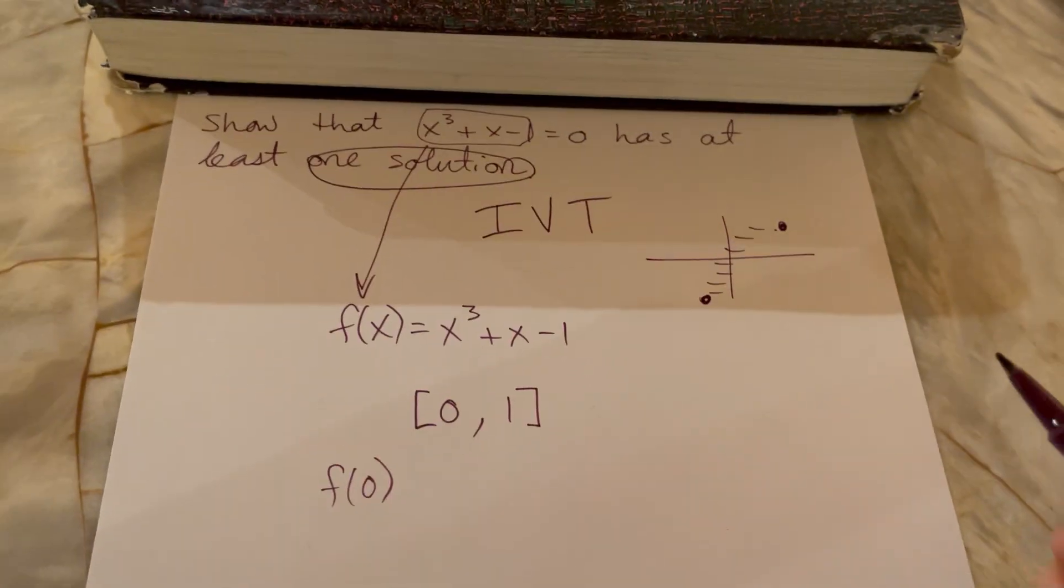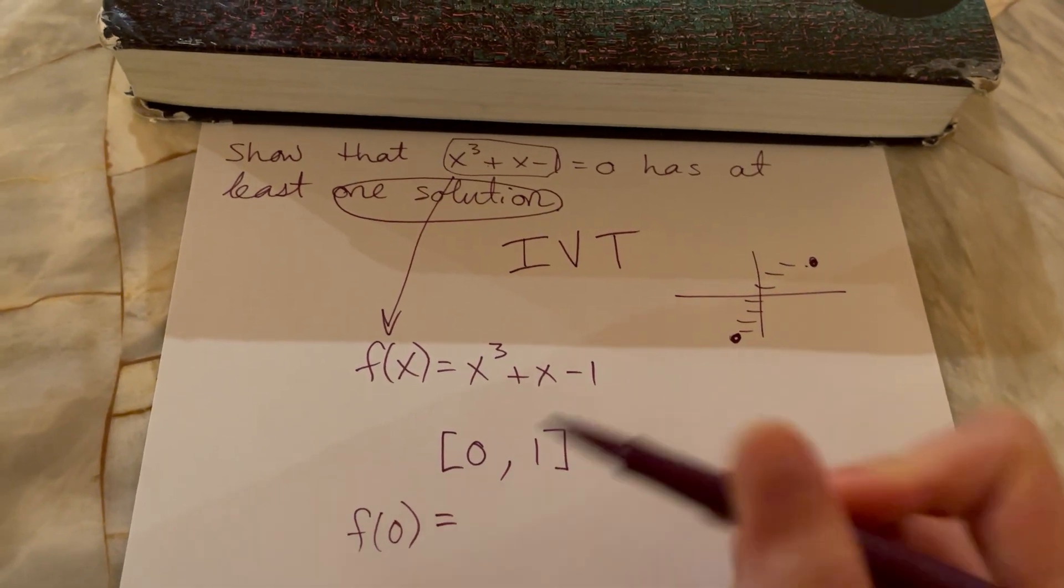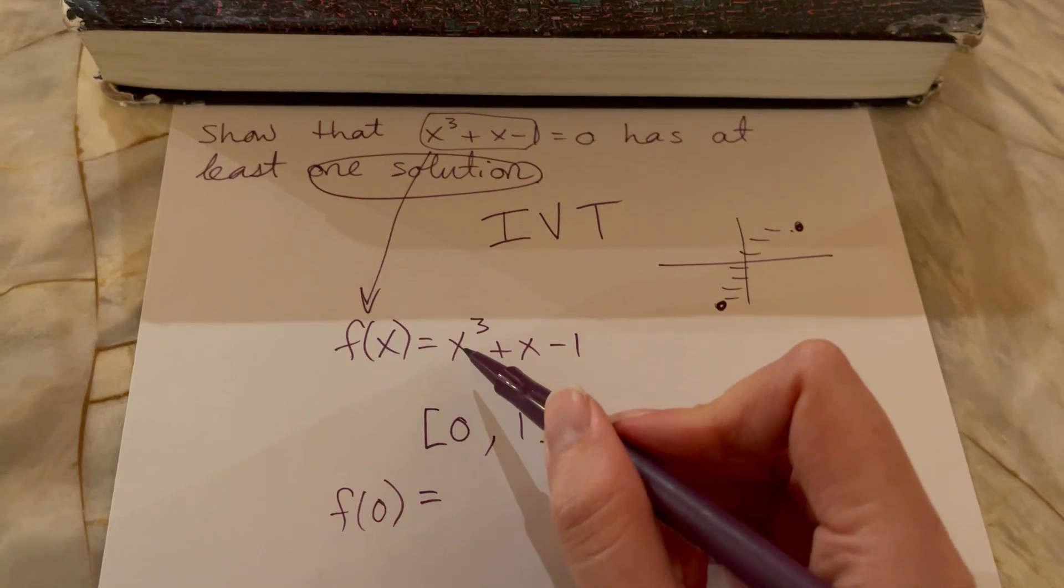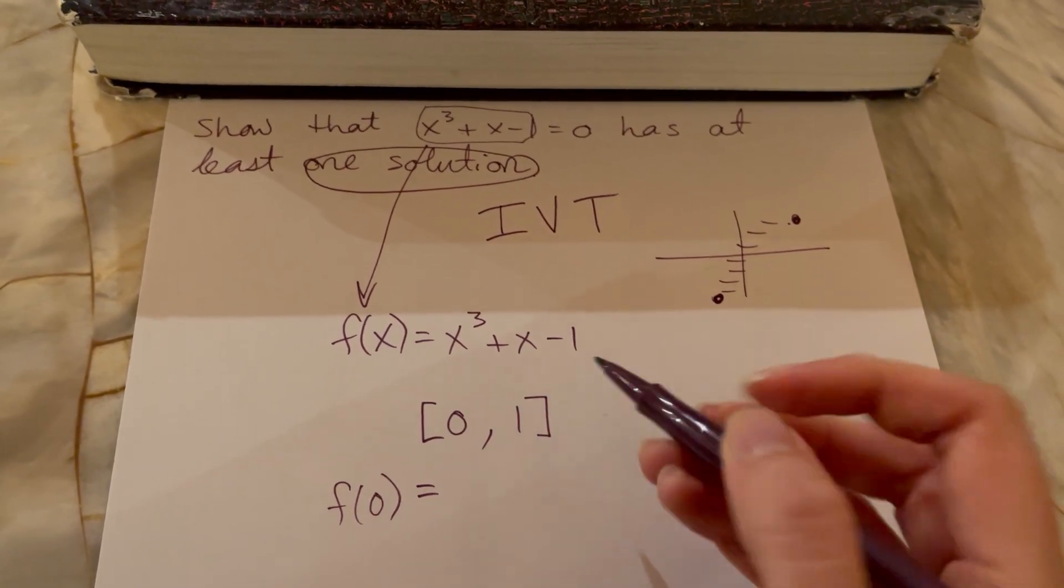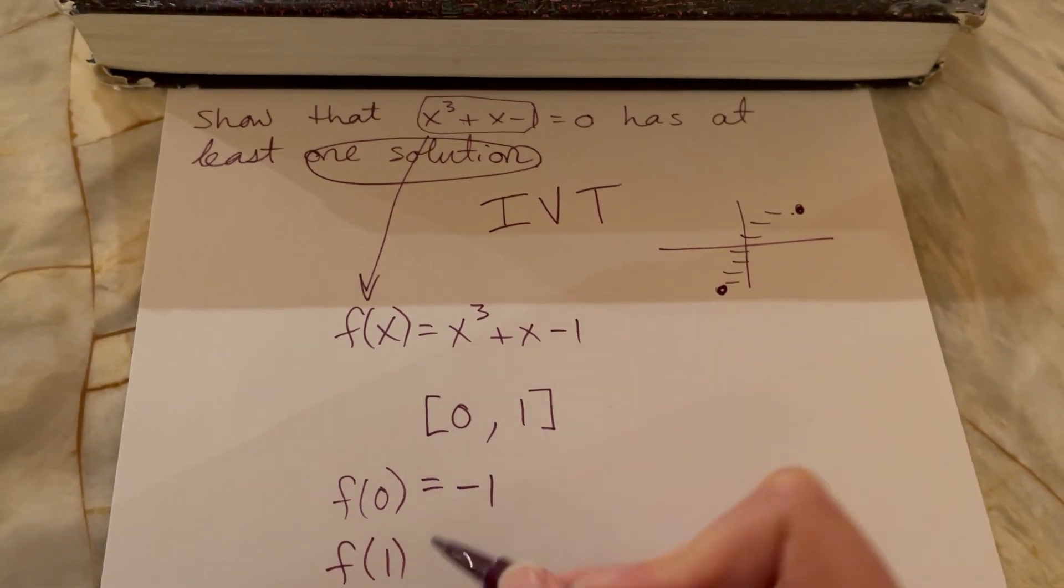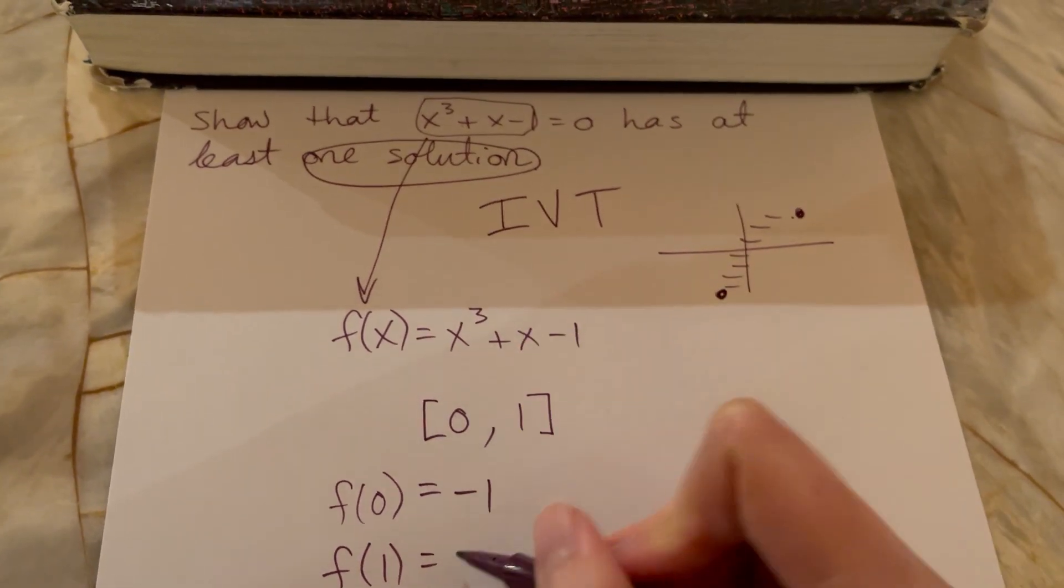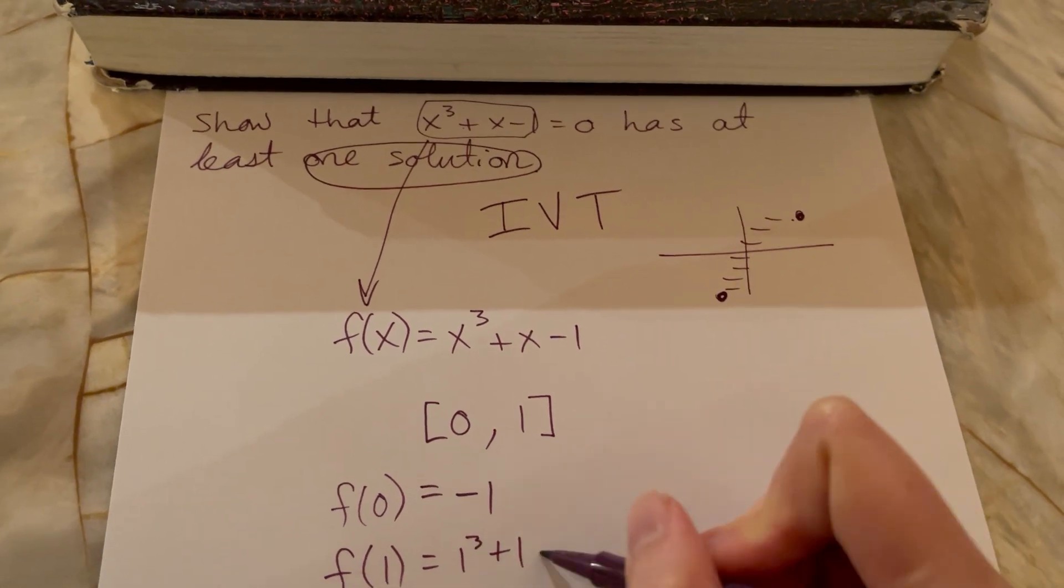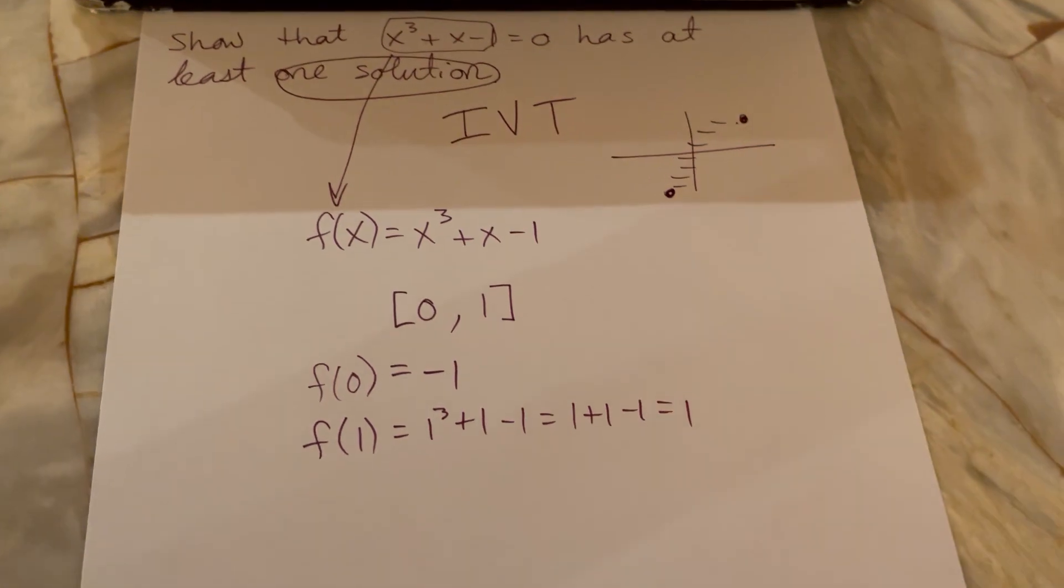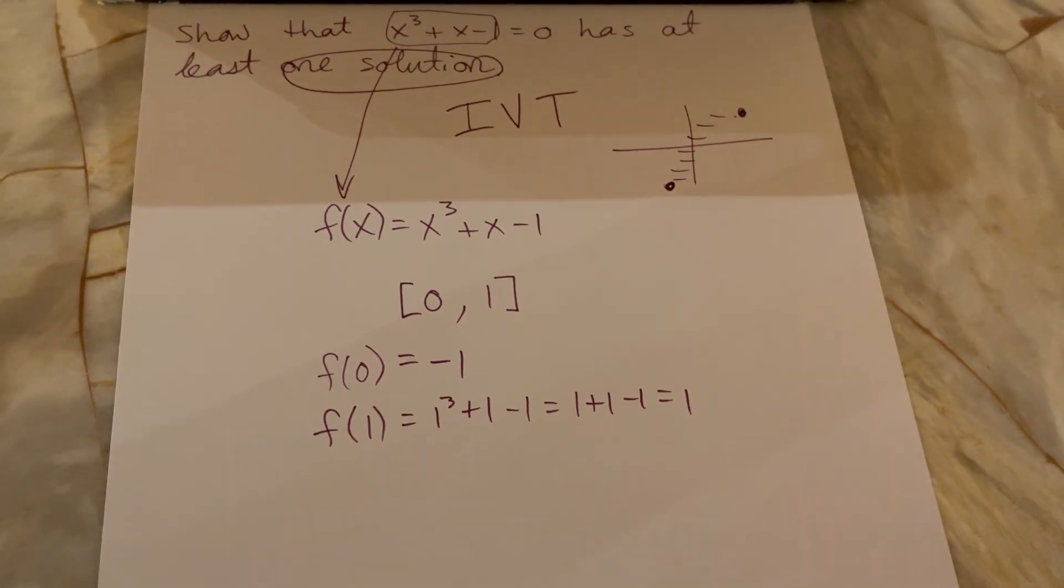When you plug in zero and when you plug in one, what do we get for a function height at zero? Well we get zero cubed plus zero minus one. And if we plug in one we get one cubed plus one minus one. We get one plus one minus one and we get one for our answer.